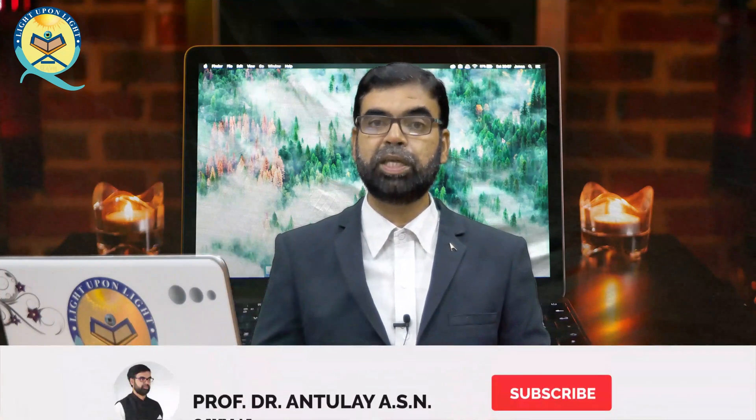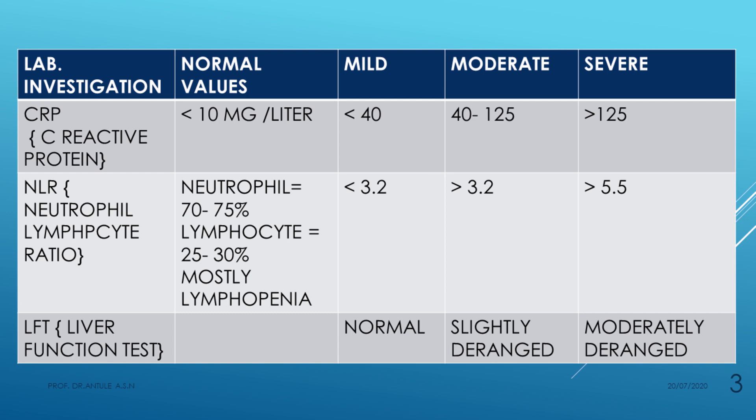The second key lab value is the neutrophil-lymphocyte ratio. Most COVID-19 patients suffer from lymphopenia — lymphocyte count goes low despite it being a viral condition. Normally, neutrophils are 70–75% and lymphocytes are 25–30%, giving a ratio of about 3. If the ratio is less than 3.2 it is mild; more than 3.2 is moderate; more than 5.5 is severe.